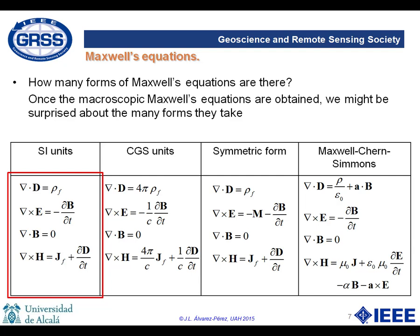One of the most frustrating experiences for those coming to study Maxwell's equations is to realize that even sticking to vector notation we find a wealth of different versions, depending on the system of units used, but also on the fact of including false sources placed virtually to represent certain boundary conditions, or even depending on the purpose of including some quantum effects if we are inside solids or condensed matter. The Maxwell-Chern-Simons version is an extreme case of this, brought here only as an illustrative example.